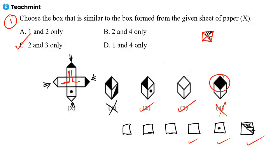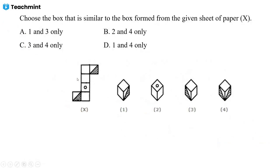Option C. We have a couple of questions in a similar manner to understand how to handle empty boxes. When every box is filled with a symbol or number it's easy, but when boxes are empty, how to handle that is the discussion. Now see the next one — choose the box which is similar to the box formed when you fold the given sheet.